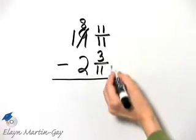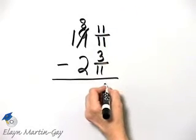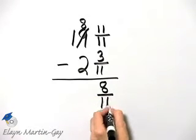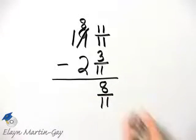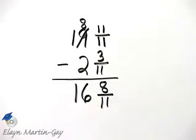Now, what is 11 over 11 minus 3 over 11? That's 11 minus 3, which is 8, over that common denominator of 11. And then 8 minus 2 is 6, and then bring down the 11.